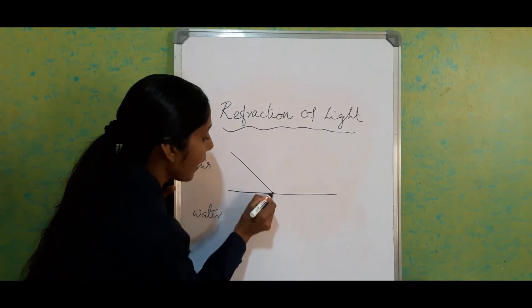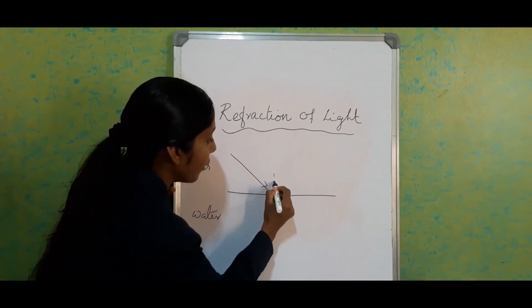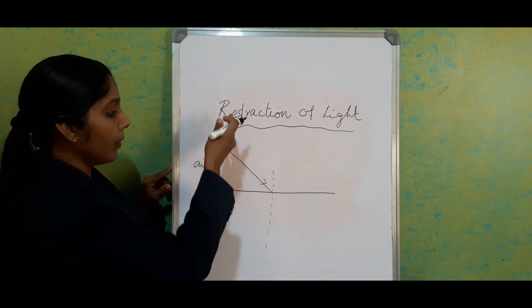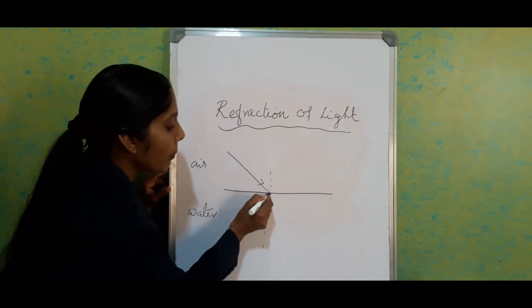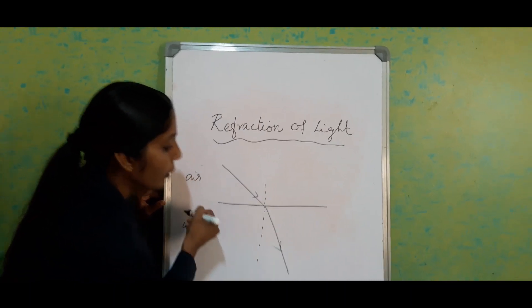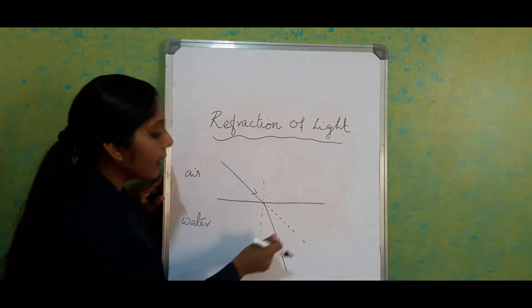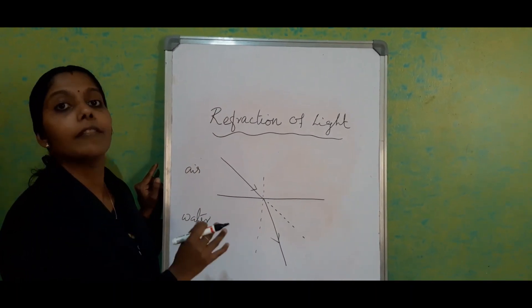So if a light ray falls this way, here we have the normal. Light is traveling from rarer medium to denser medium, so it bends towards the normal. This is the original path. This path deviation is actually called the refraction of light.